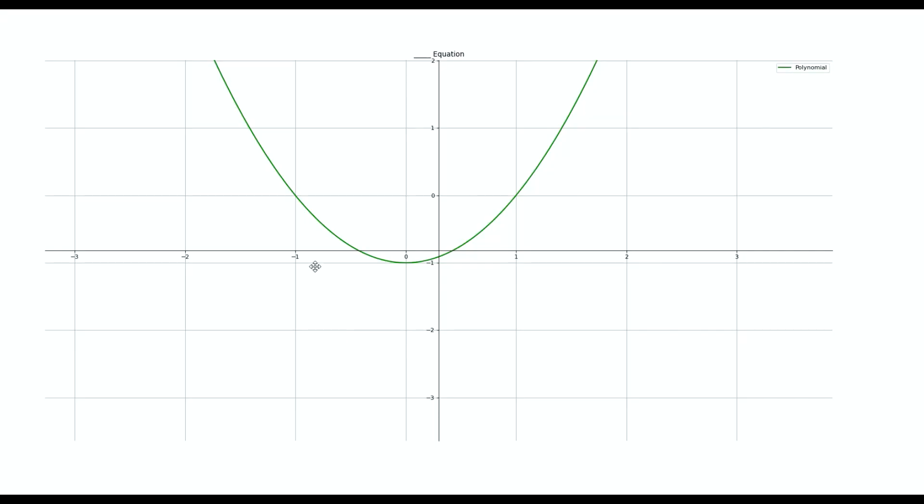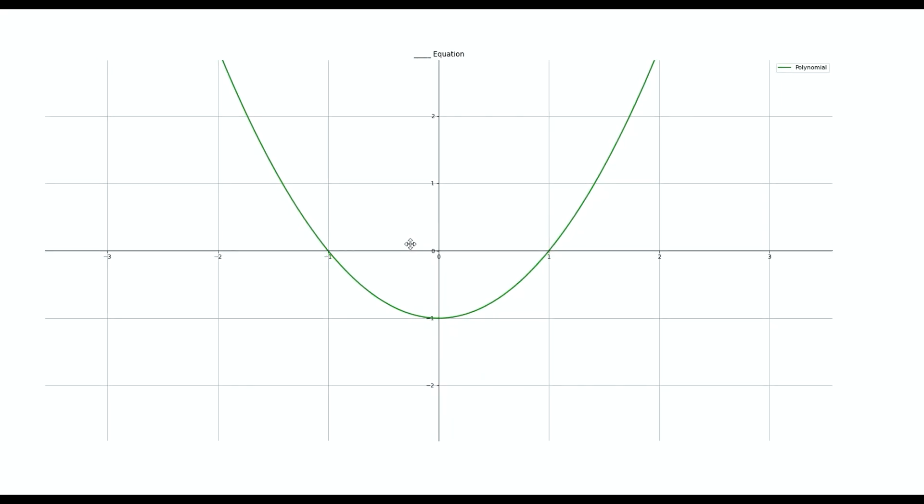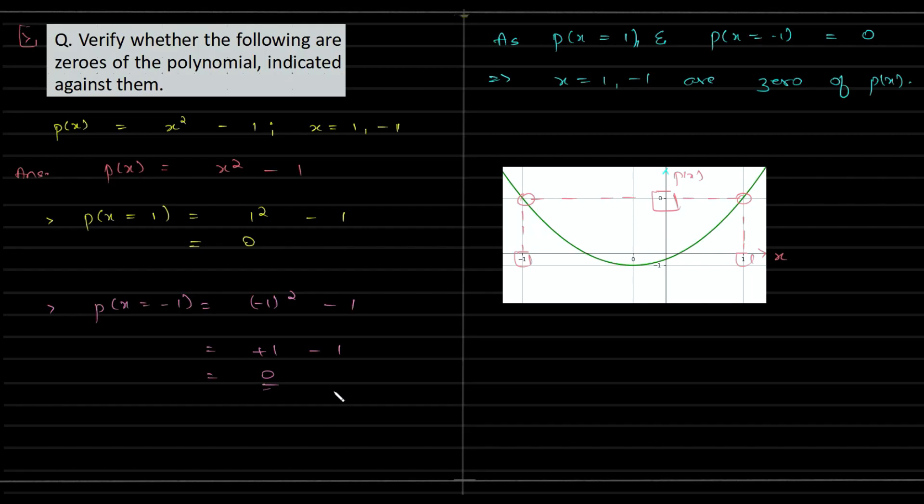Zero of the polynomial means that input value which makes the output to be zero. So graphically you can have a look at the zero by adjusting your graph. You can clearly see this particular graph is crossing the x-axis at minus one and plus one. And so minus one and plus one are your zeros. Input value which makes output to be zero are your zeros of the polynomial.